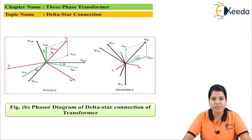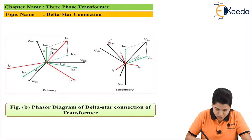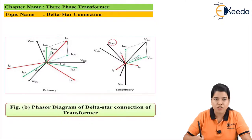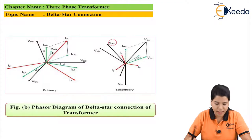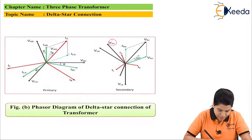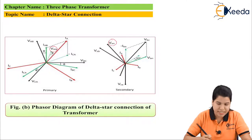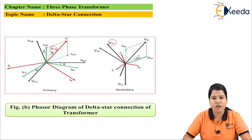The figure shows the phasor diagram for delta-star connection. If we see the phasor diagram, the voltage Van of the secondary winding is leading the voltage VAN of the primary winding by 30 degrees.